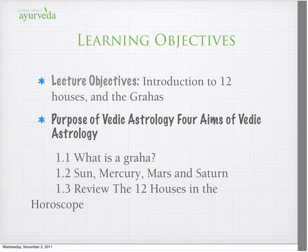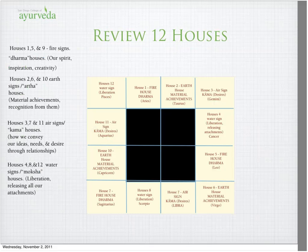What is a graha? Graha means to grasp. Today we're going to look at the sun, moon, Mercury, and Mars. And then we're going to look at a chart. This is the chart we displayed last week.